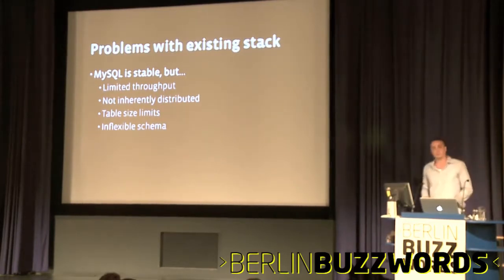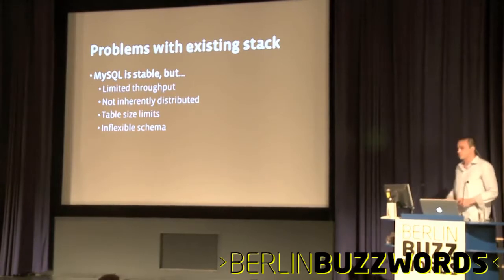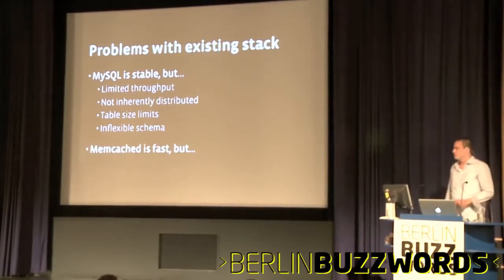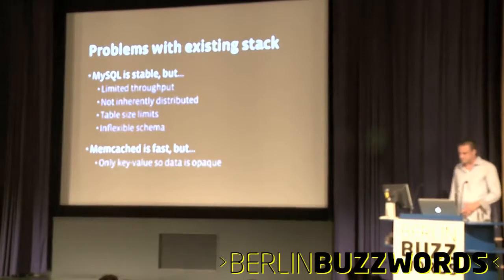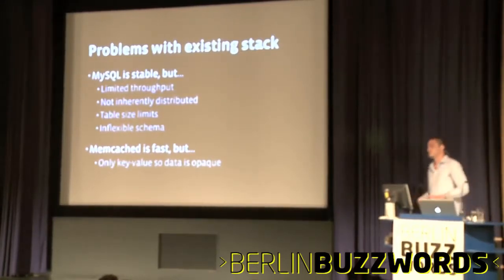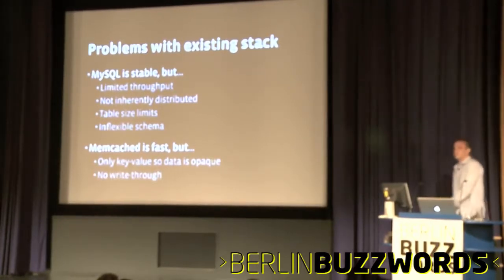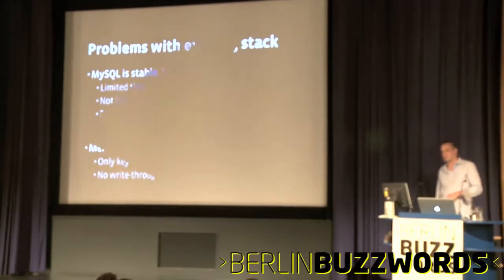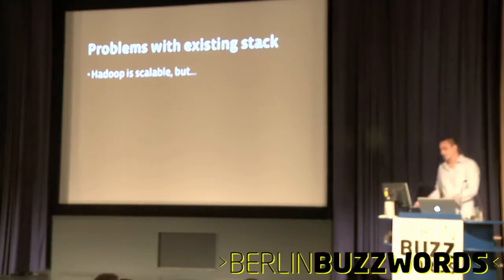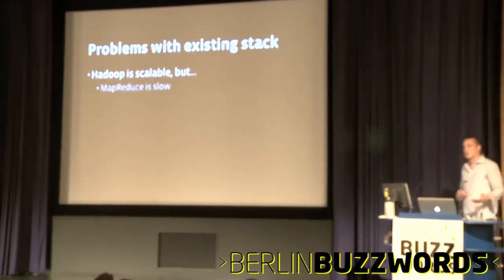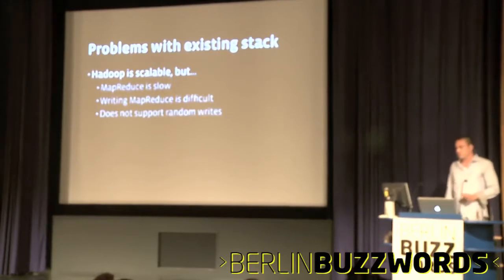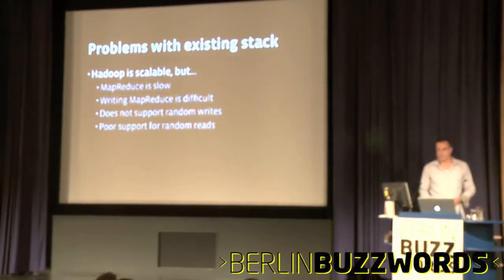MySQL also has a very inflexible schema. There have been improvements where we can change schemas online, but in general it's a very fixed row-oriented schema. Memcache, on the other hand, is very fast and very high throughput, but it's only key-value, so all the data inside the values is completely opaque — there's no write-through. If I have 100 megabytes as a value and I want to change one byte, I have to evict the entire 100 megabytes and fill it up again. Hadoop is very scalable, but MapReduce is slow, so it's not suited for online real-time stuff. Writing MapReduce is inherently difficult, there's no support for random writes, and there's poor support for random reads.